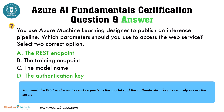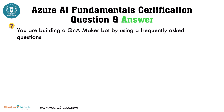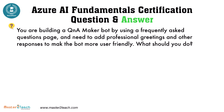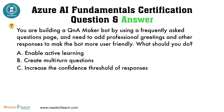You are building a Q&A maker bot by using a frequently asked questions page and need to add professional greetings and other responses to make the bot more user-friendly. What should you do? The options are: A, enable active learning; B, create multi-turn questions; C, increase the confidence threshold of responses; D, add chit-chat.